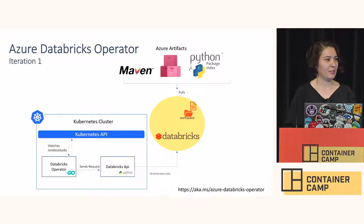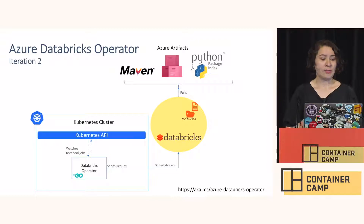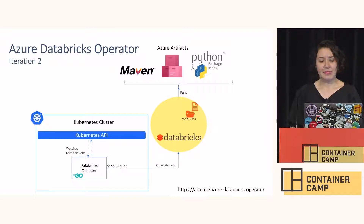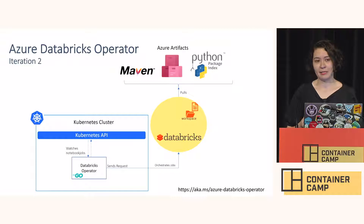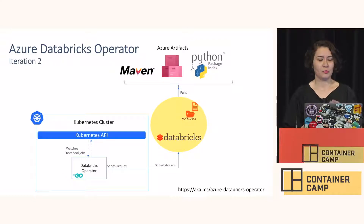In the second iteration, after confirming the ops teams were happy, we invested more and created our own Go SDK for Databricks, so we had only one application. This made the whole process much easier — previously we had two different CI/CD pipelines, two different images to manage, and had to context switch between two languages. Now everything is in Go and it's very clean.